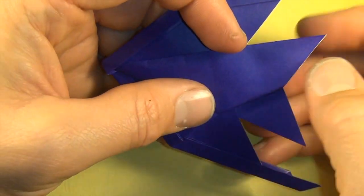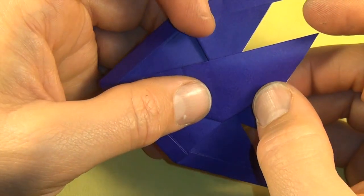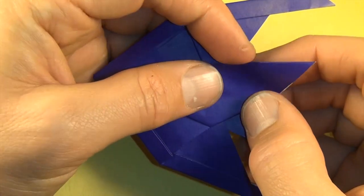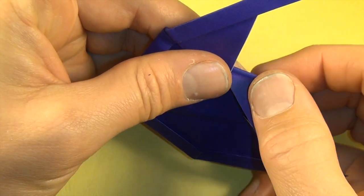But if you want a fish that looks a little bit nicer, not a finger puppet, what you can do is first valley fold this flap so that it lines up with this edge.